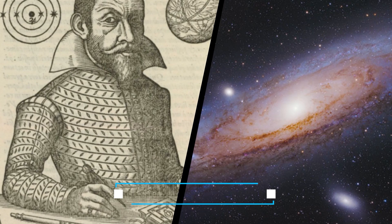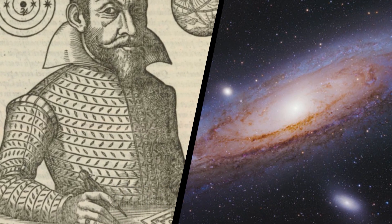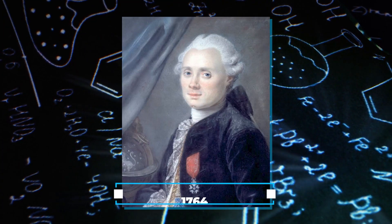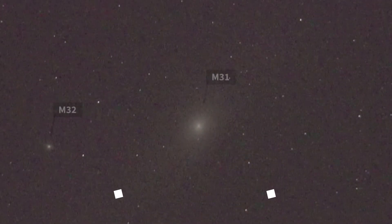But in 1612, a scientist named Simone Marius used a telescope to get a closer look at Andromeda. And in 1764, another scientist named Charles Messier gave it a number, M31.